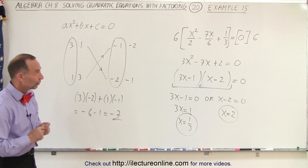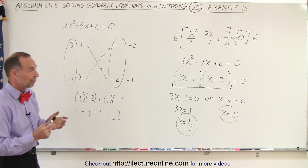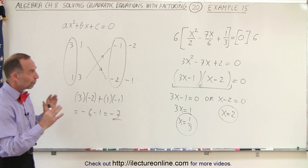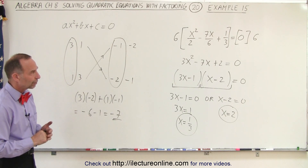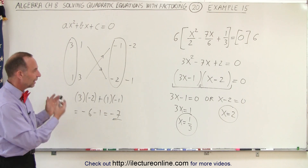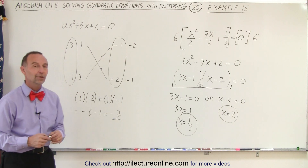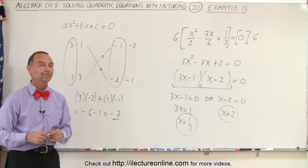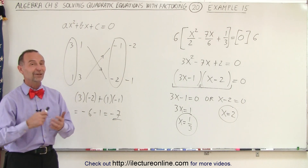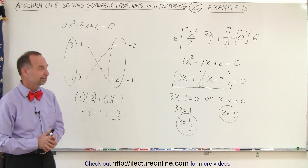And notice, when you have fractions, first get rid of them — multiply both sides by the lowest common denominator — and then you proceed in the normal fashion. And that is how it's done.